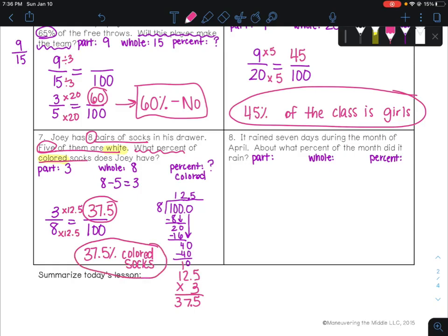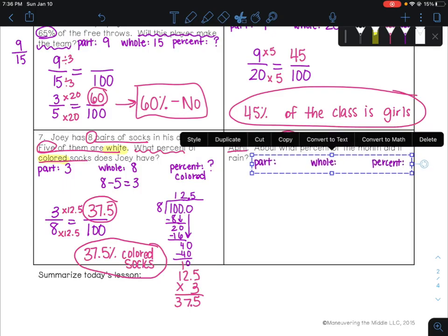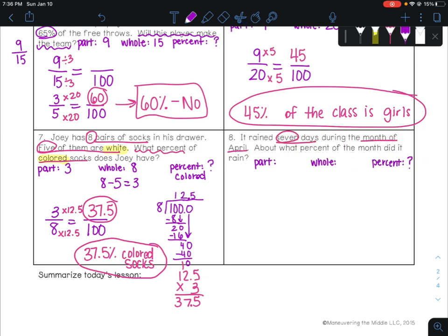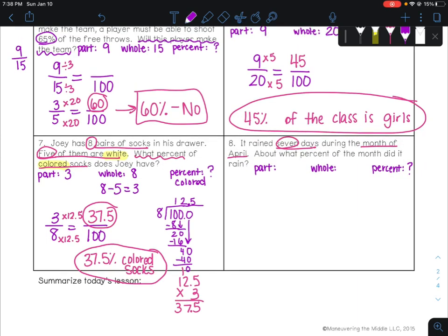And last up, number 8. It rained 7 days during the month of April. About what percent of the month did it rain? So right away, we don't know the percent. We just know that it rained 7 days out of the month of April. So 7 days out of the whole month. So 7 is the part. It's the part that rained. And the whole is however many days are in April. It's either 30 or 31. And if you look it up, you're going to see that it's 30 days. So we know our part. We know our whole.